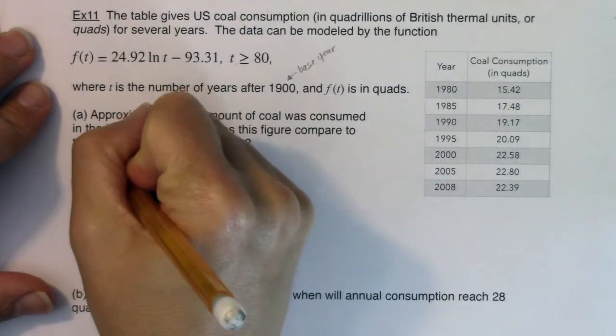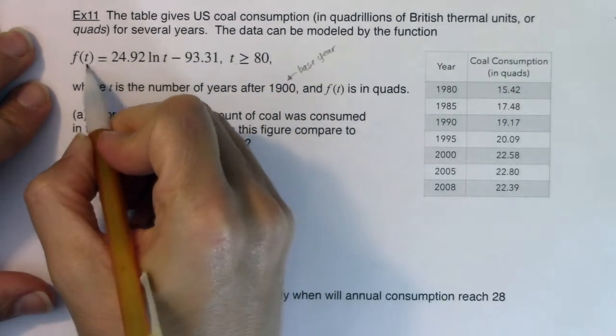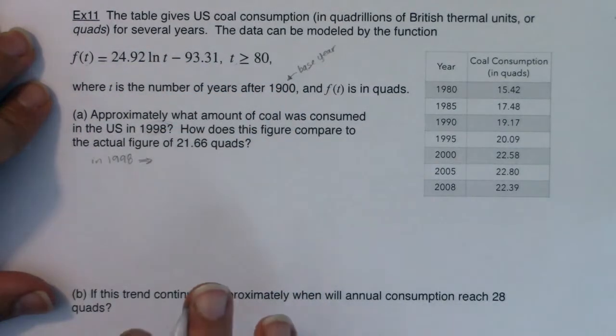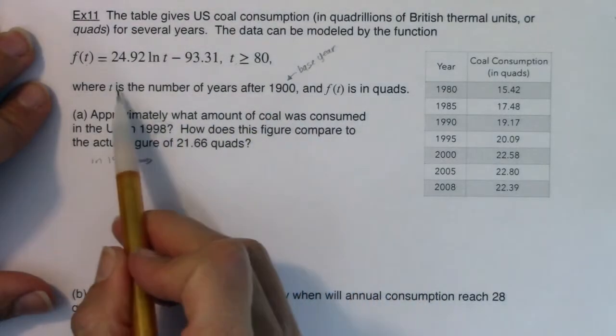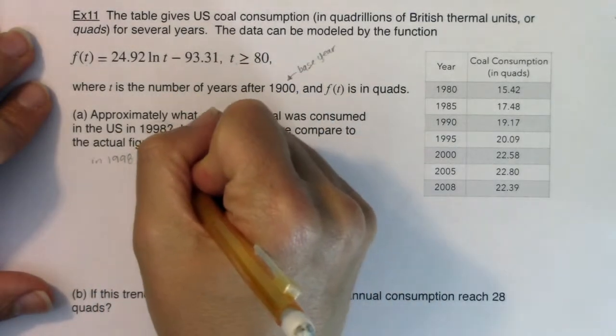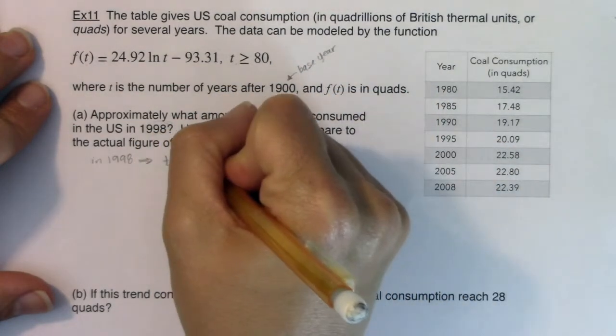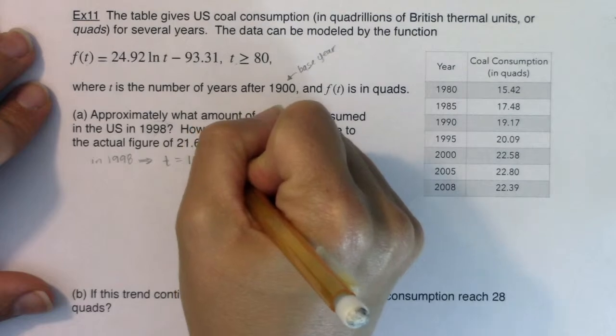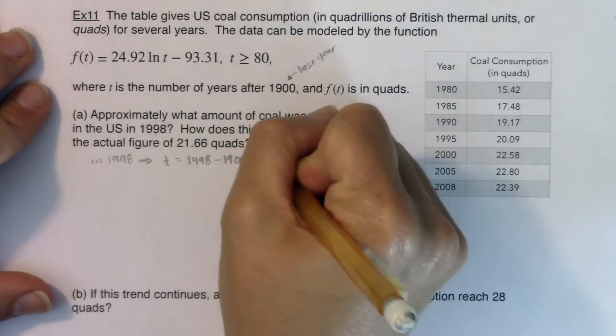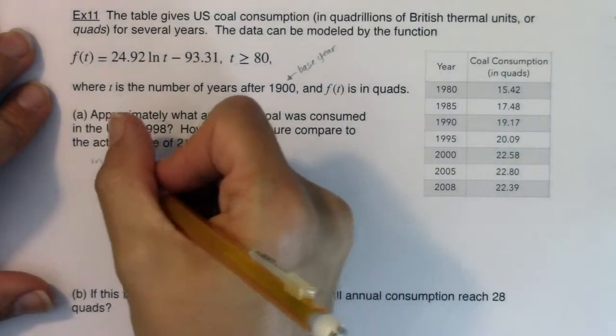So let's see what we got here. Now, if we're talking about 1998, I don't want to plug 1998 in for t because that's not how this model was set up. t is the number of years after 1900. So if you ever want to find your t value and you have a base here, take your current value and subtract out your base value, and you're going to find out the t value.